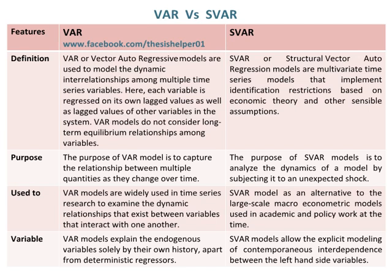VAR models explain the endogenous variables solely by their own history, apart from deterministic regressors. Whereas, SVAR models allow the explicit modeling of contemporaneous interdependence between the left-hand side variables.